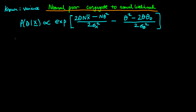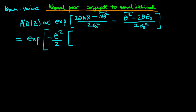What I'm going to do with this term is collect the powers of theta and theta squared respectively. If we do that, we can rewrite this as being equal to the exponent of minus theta squared over 2. If I collect up the powers of theta squared, you can see that there's 1 here and there's also 1 here, so I can write this first as 1 over sigma theta squared, and then plus n over sigma x squared.